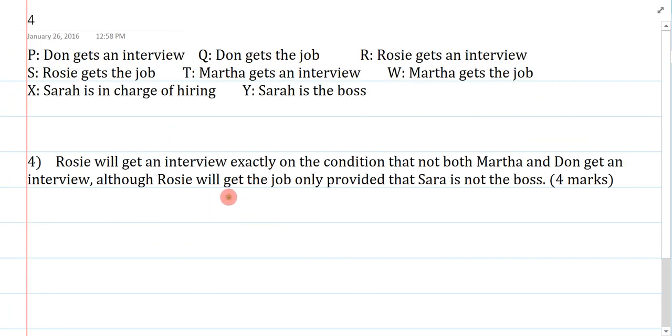Next. Rosie will get an interview exactly on the condition that not both Martha and Don get an interview, although Rosie will get the job, only provided that Sarah is not the boss. Now this might seem really long, but this is no big deal. Exactly on the condition is an important connective. Not both is another one. Now I should realize that there is a big comma here, and I have the word although. What that tells me is that this is a conjunction, and the main connective here is the and from the although. With that in mind, I don't have to worry about this really long thing. I'm just going to symbolize the left conjunct first, and then I'll symbolize the right conjunct second.